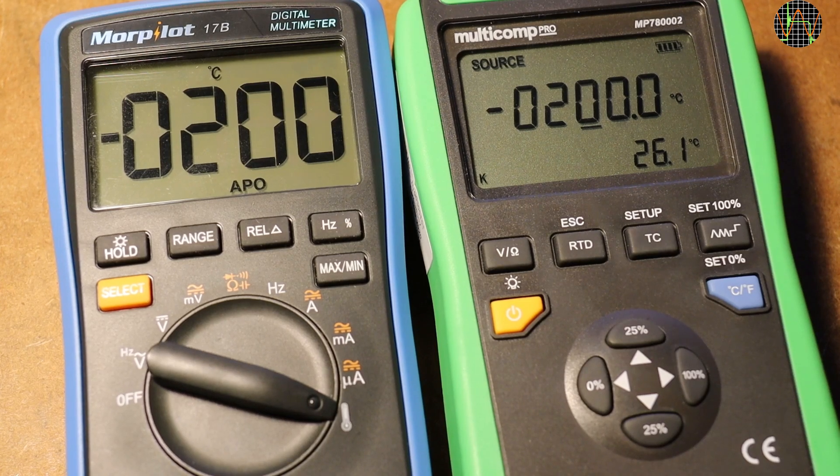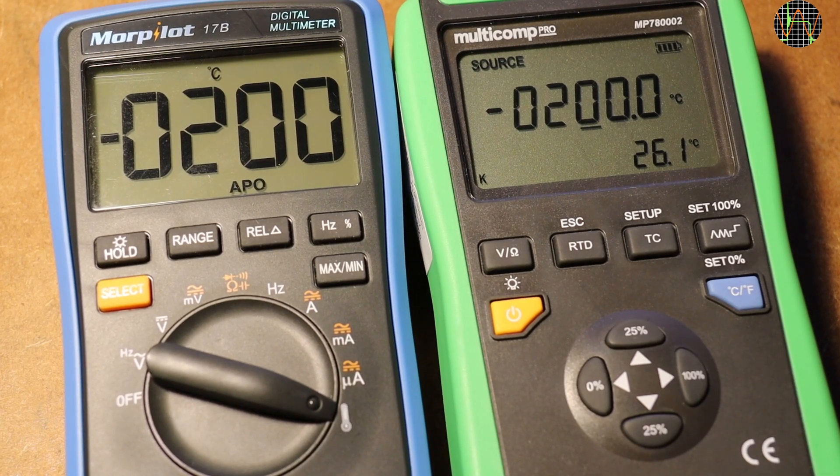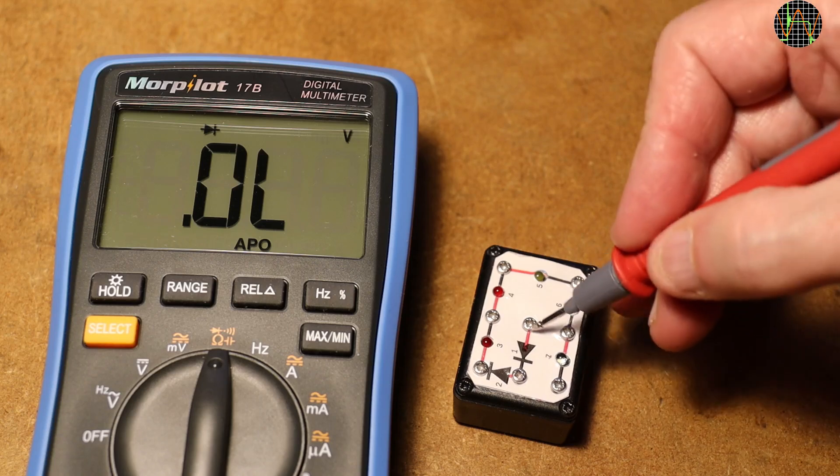So if you have a K-type sensor for that, the Morpilot is ready. Getting back from the cold, in diode mode there is of course no problem measuring a single diode.